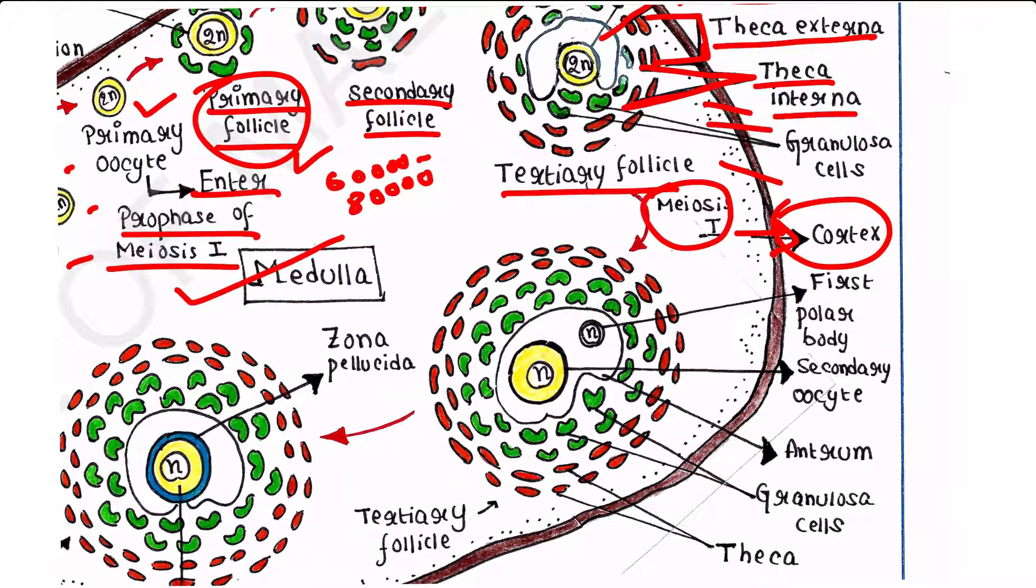Now it is an unequal division that results in the formation of a large haploid secondary oocyte. This is a haploid cell because it comes after meiosis 1. It is a large secondary oocyte and a tiny cell that is the first polar body. This is a very tiny cell, the first polar body. This is an unequal division because secondary oocyte and first polar body are not equal in size. Secondary oocyte is larger and first polar body is smaller. Now this first polar body will get degenerated. It will die.